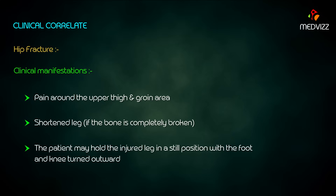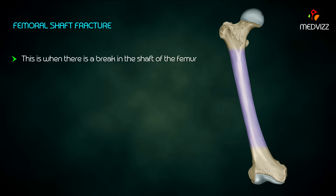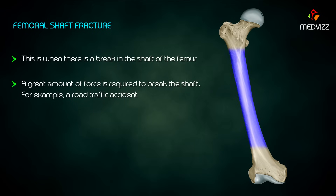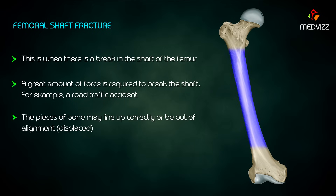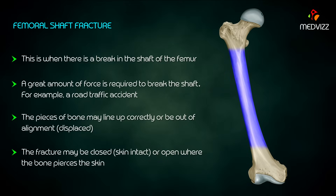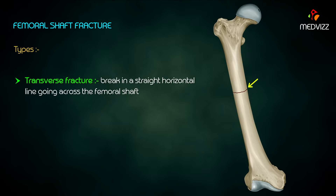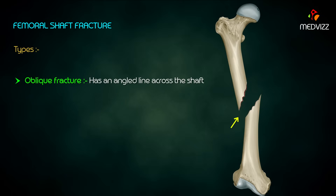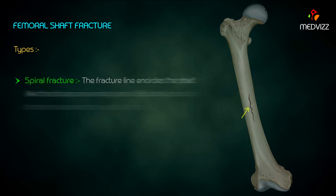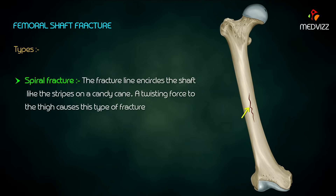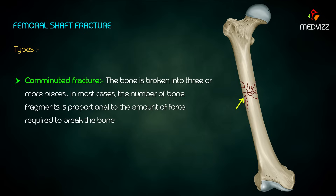Femoral shaft fracture occurs when there is a break in the shaft of the femur. A great amount of force is required, for example in a road traffic accident. The pieces of bone may line up correctly or be out of alignment, and the fracture may be closed or open where bone pierces the skin. Types include: transverse fracture — a straight horizontal break across the shaft; oblique fracture — an angled line across the shaft; spiral fracture — a fracture line that encircles the shaft like the stripes on a candy cane, caused by a twisting force to the thigh.